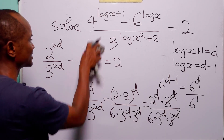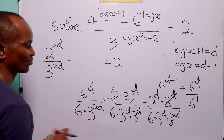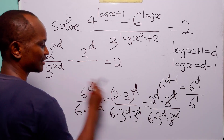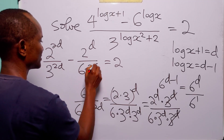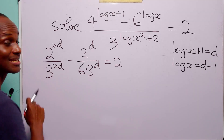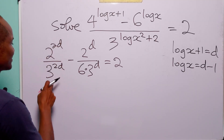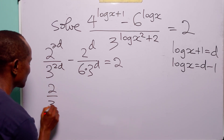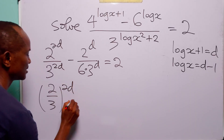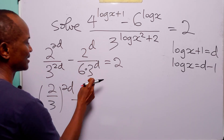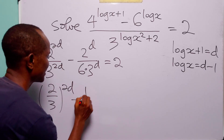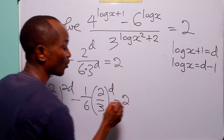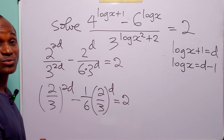We replace the fraction with 2 to the power d divided by 6 times 3 to the power d. Notice that we have 2 to the power 2d and 3 to the power 2d with equal exponents, so we can write that as 2 over 3 to the power 2d. Similarly, we combine 2 to the power d and 3 to the power d as 2 over 3 to the power d. The equation becomes 2 over 3 to the power 2d minus 1 over 6 times 2 over 3 to the power d equals 2.